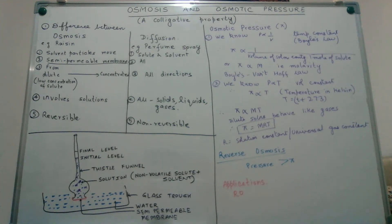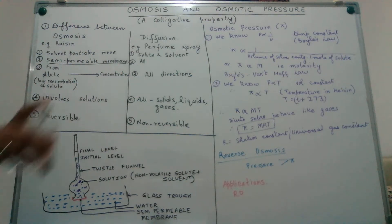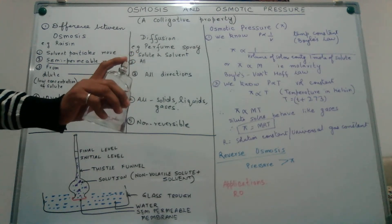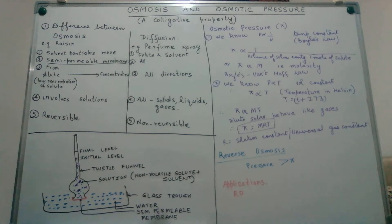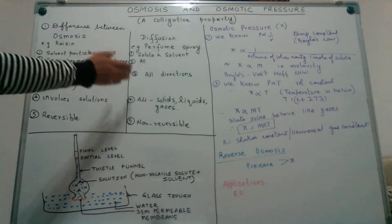First of all we need to discuss two experiments. Take a perfume bottle and spray it in your room. I have sprayed it far from myself, but still we are able to feel the fragrance of the perfume in other parts of the room. This phenomenon is what we call diffusion.